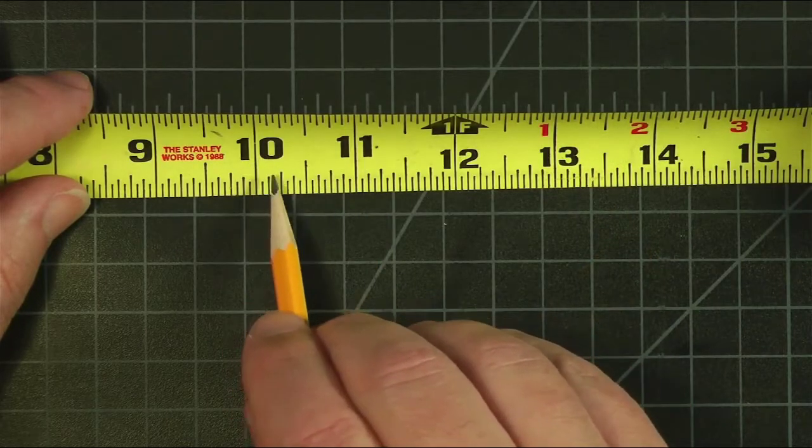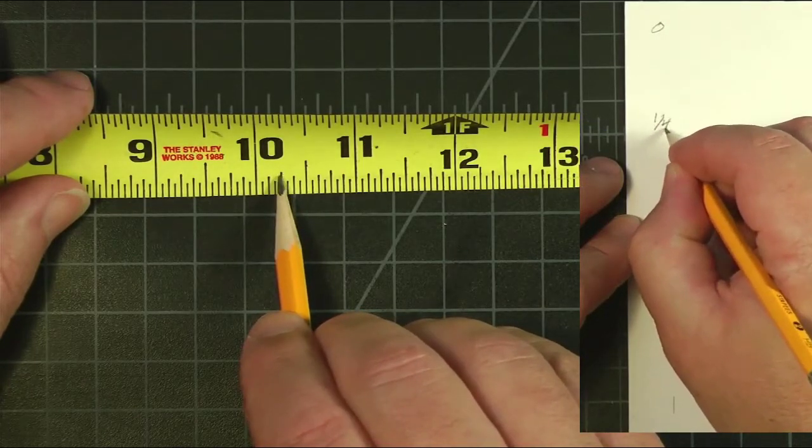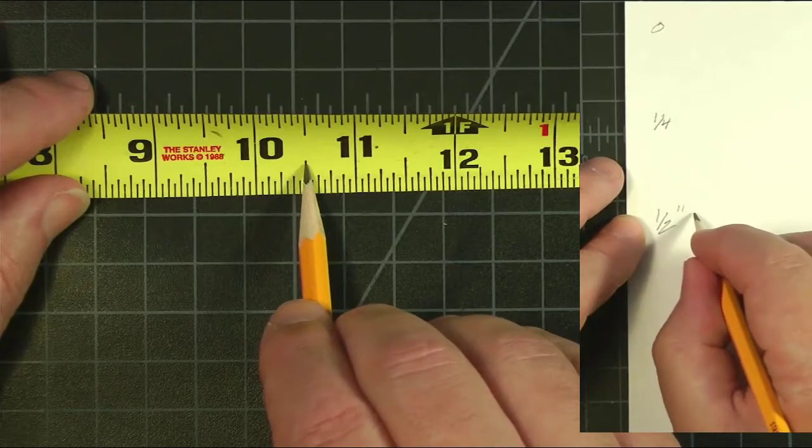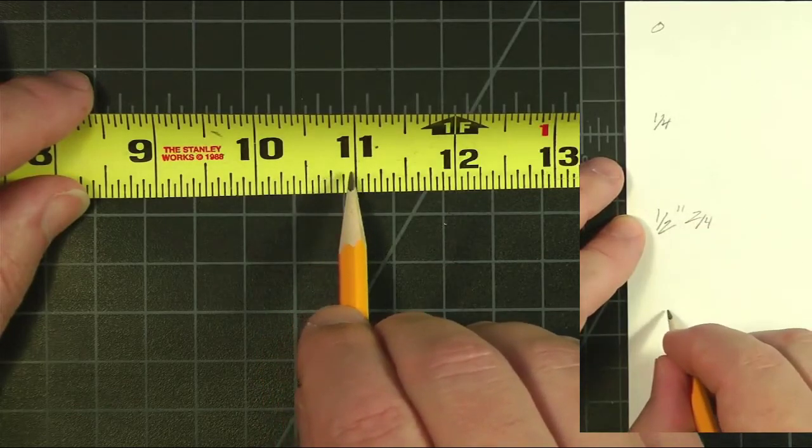0, half of half is a quarter, then we have the half which is also 2 quarters, we have 3 quarters, and then the 1.